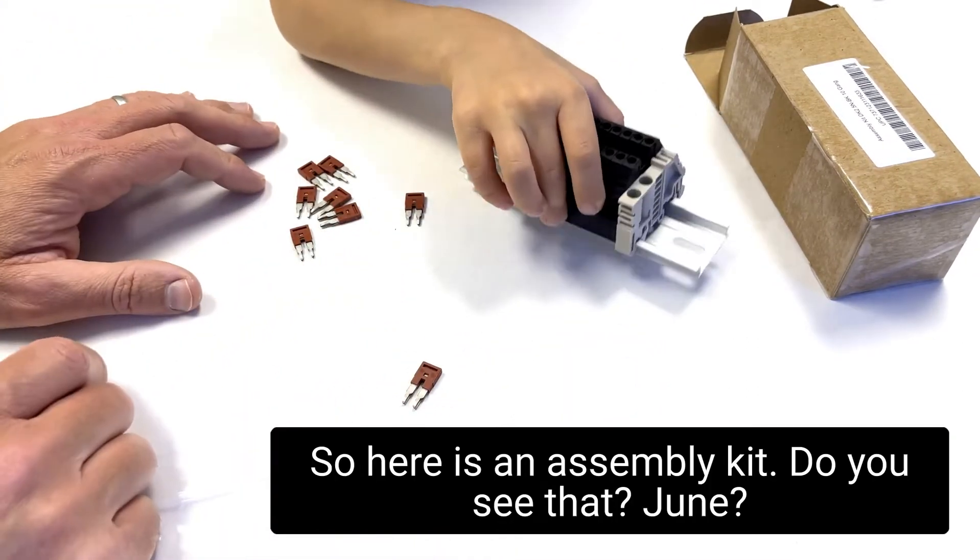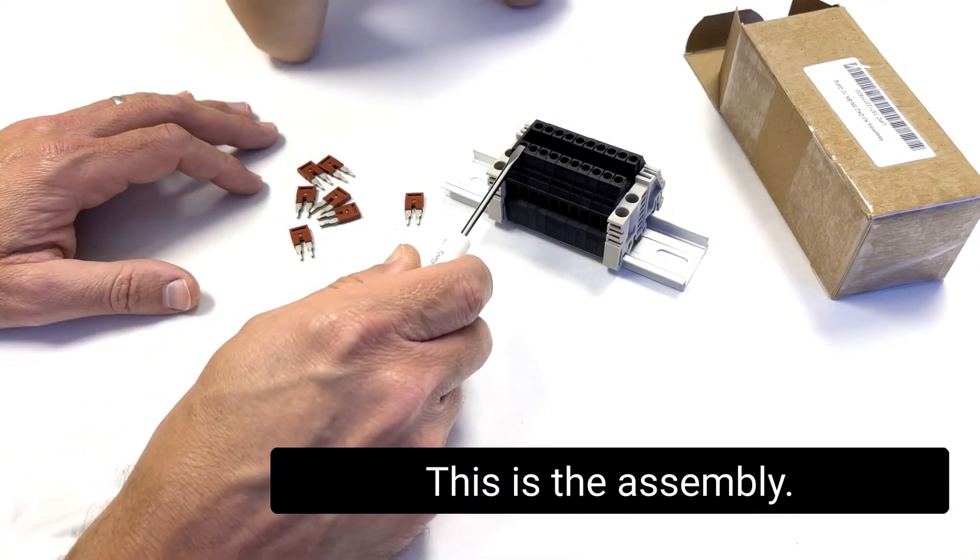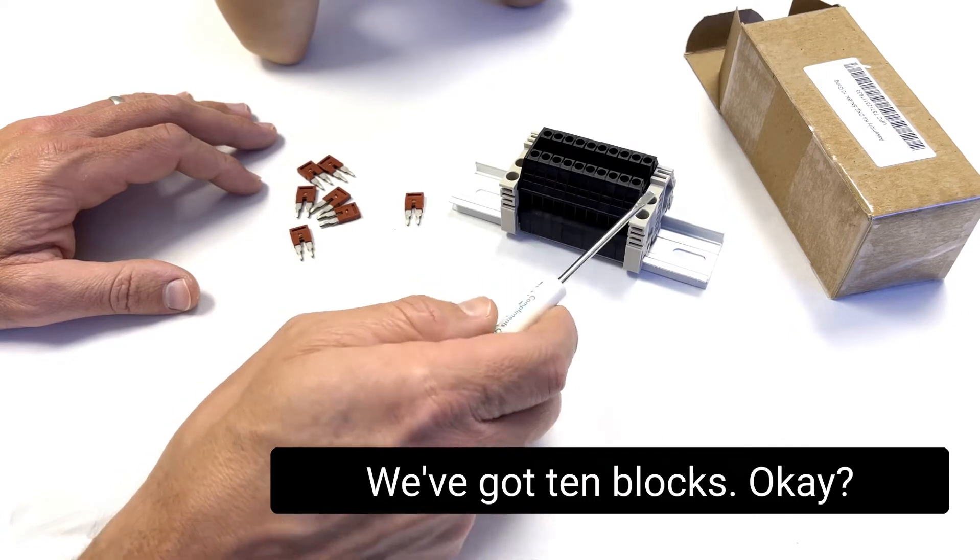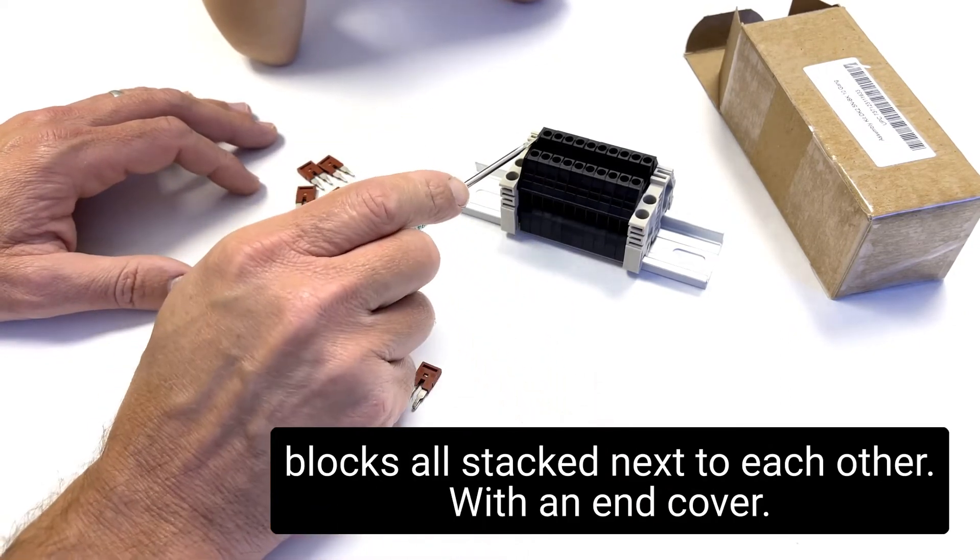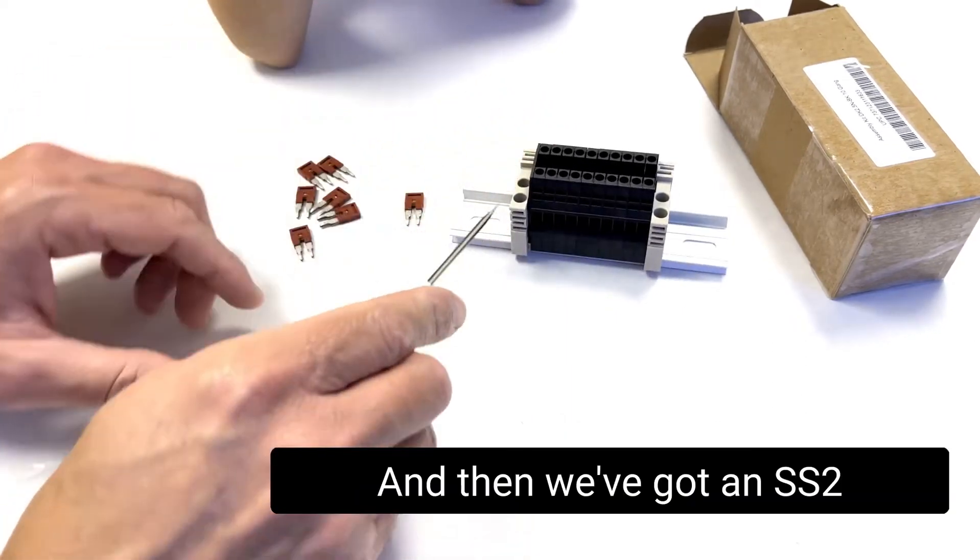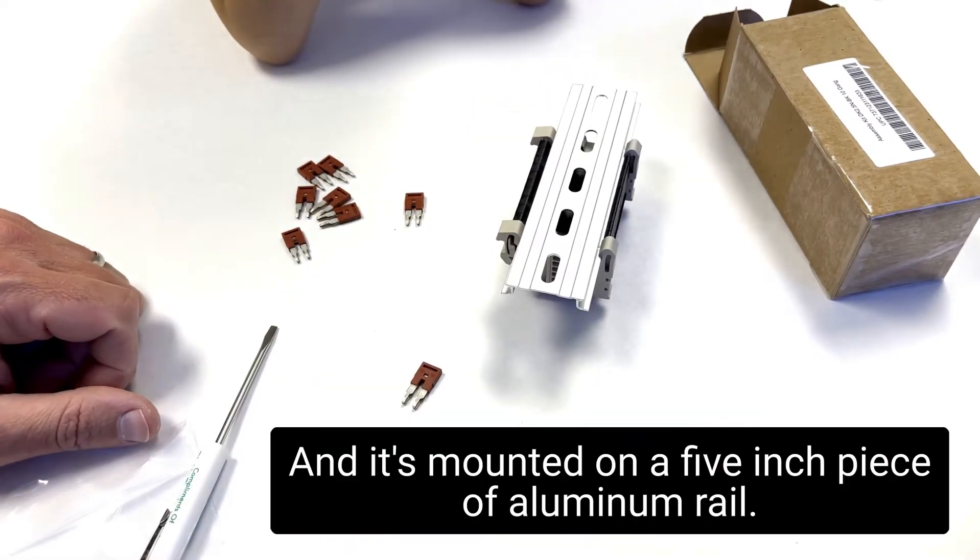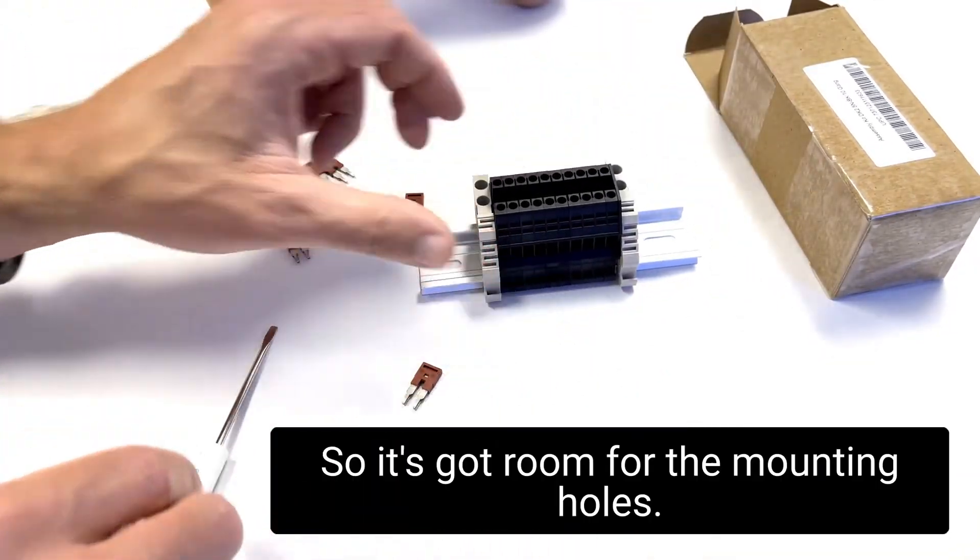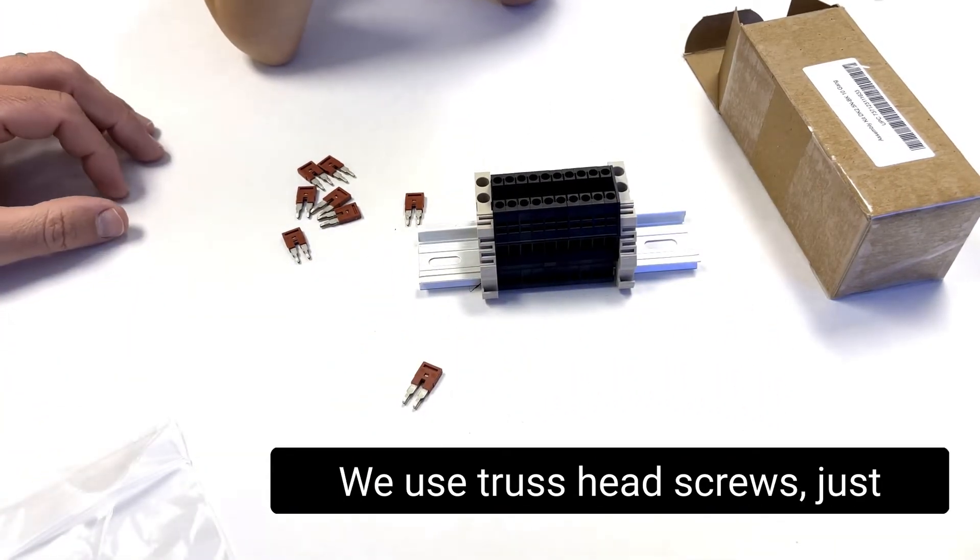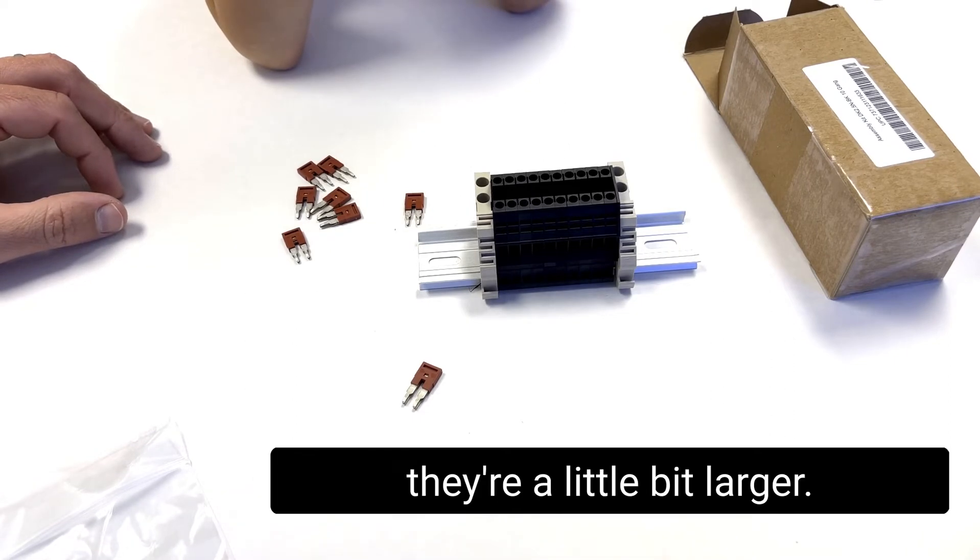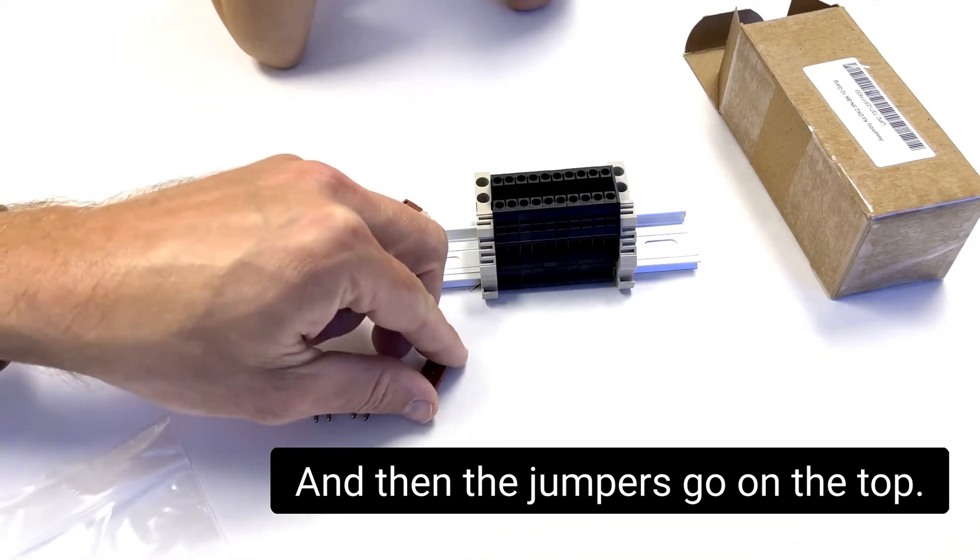So here is an assembly kit. You see that, June? So this is the assembly. So we've got 10 blocks. Okay. So you've got 10 DK2.5 end blacks all stacked next to each other. A little end cover. See that black end cover right there? And then we've got an SS2 end bracket on either side. And it's mounted on a five inch piece of aluminum rail. So it's got room for the mounting holes. So we can just mount mounting screw here, mounting screw here. We use truss, truss head screws, they're a little bit larger.